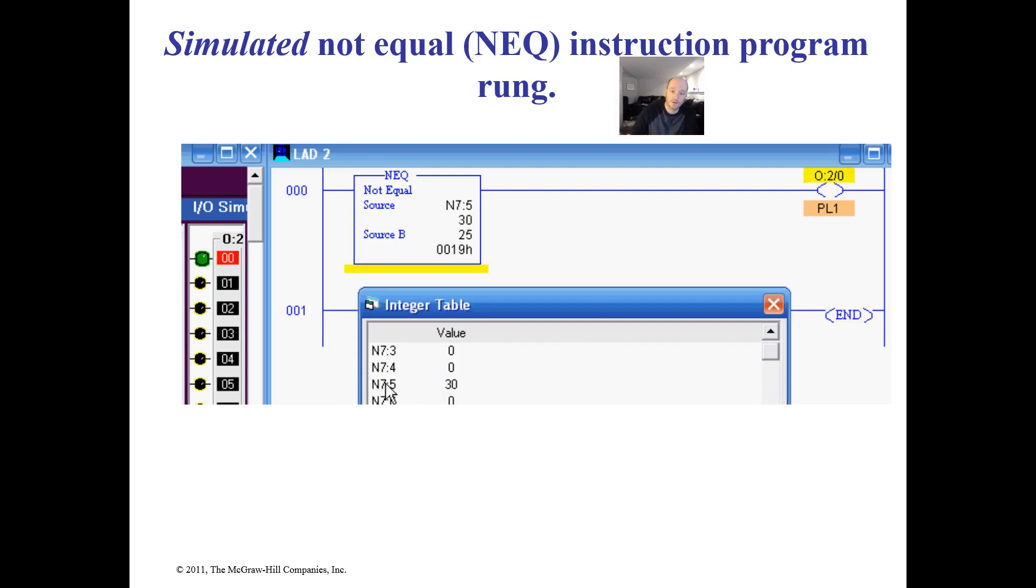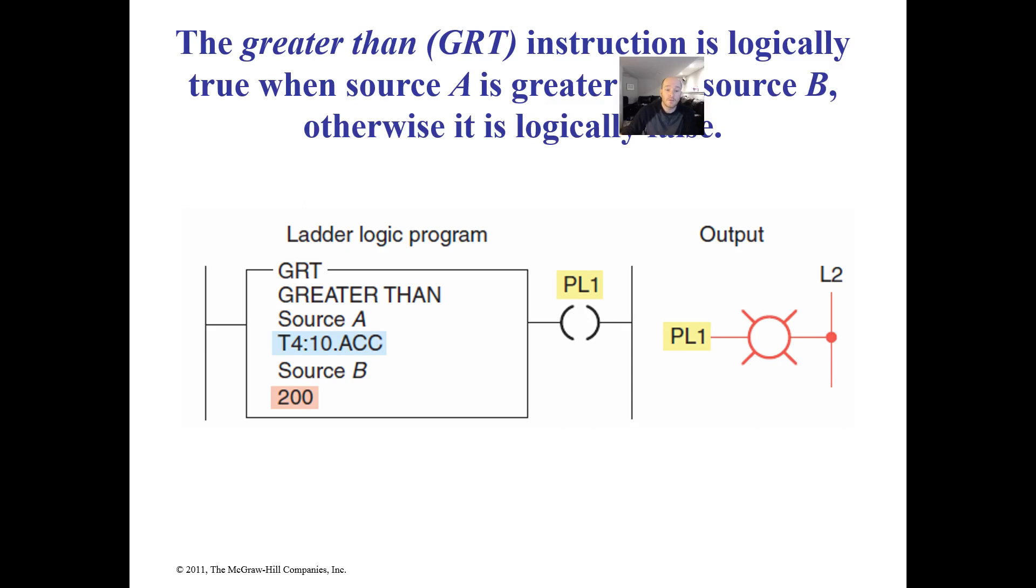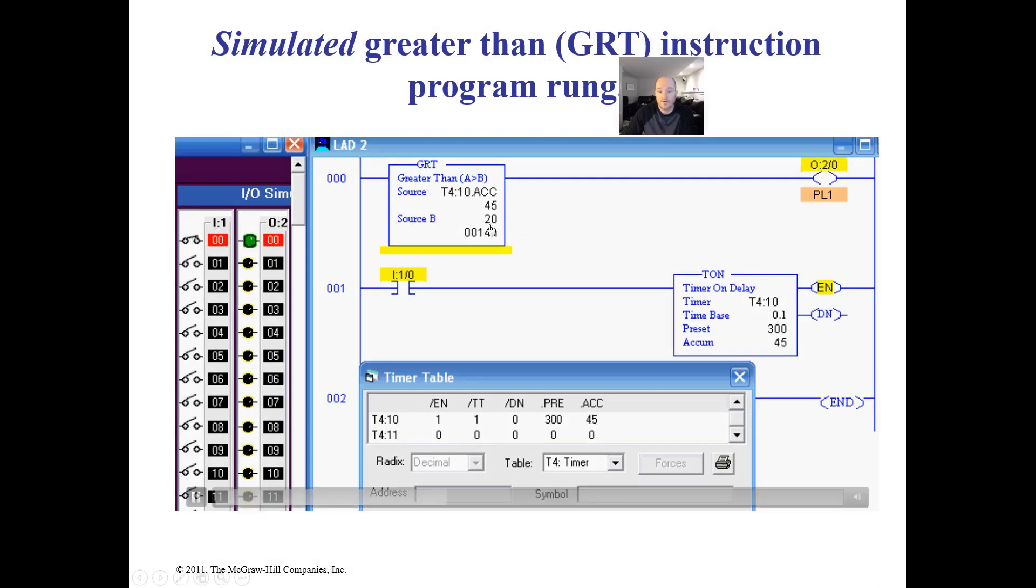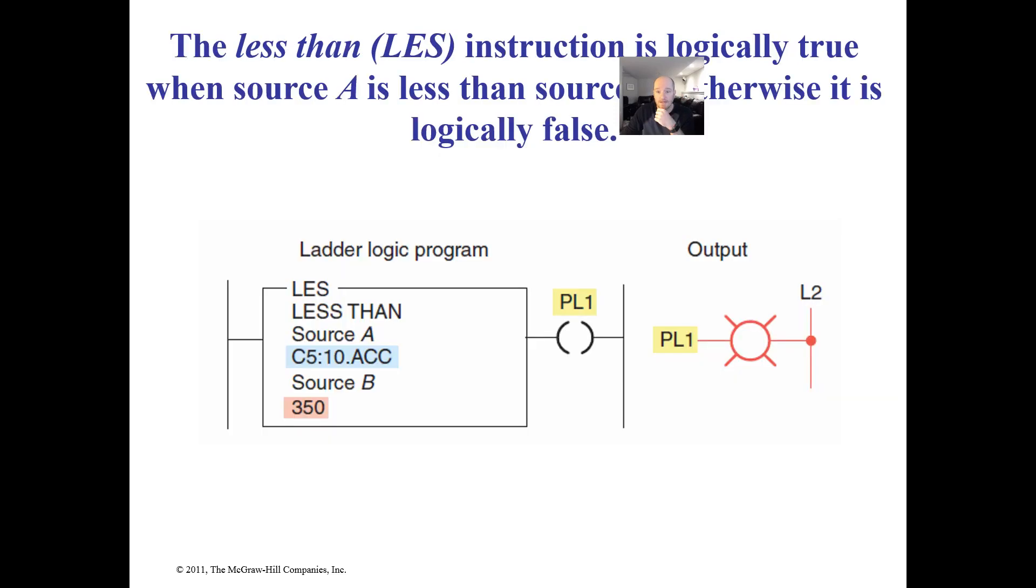Then we get to the greater than. Again, they're going to use the timer accumulated. Notice we're not using the presets. Presets are more used for output instructions when we're dumping something to them. So we activate this. Now as soon as it's greater than 20, so this has to be 21 to activate. That's why I like the greater than or equal to, because then I don't have to think about that in my head.